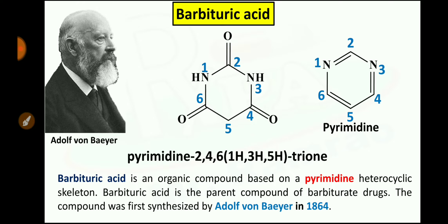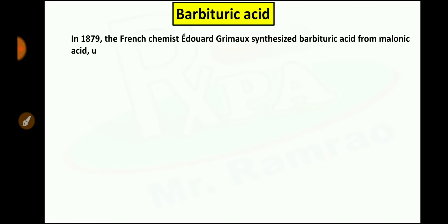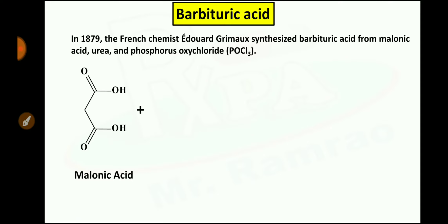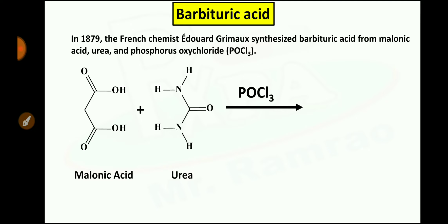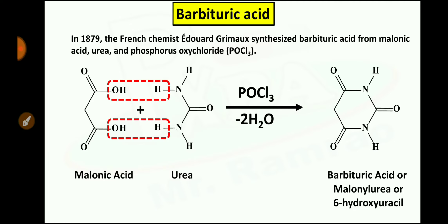First, he synthesized barbituric acid from alloxan dibromide, which we are not going to discuss in this video because this synthesis is not used nowadays. In 1879, the French chemist Edward Gramox synthesized barbituric acid from malonic acid, urea, and phosphorus oxychloride, which is simpler compared to Adolf von Baeyer's method. Malonic acid plus urea undergo a condensation reaction in the presence of phosphorus oxychloride, with the removal of two water molecules, forming barbituric acid, also known as malonyl urea or 6-hydroxyuracil.